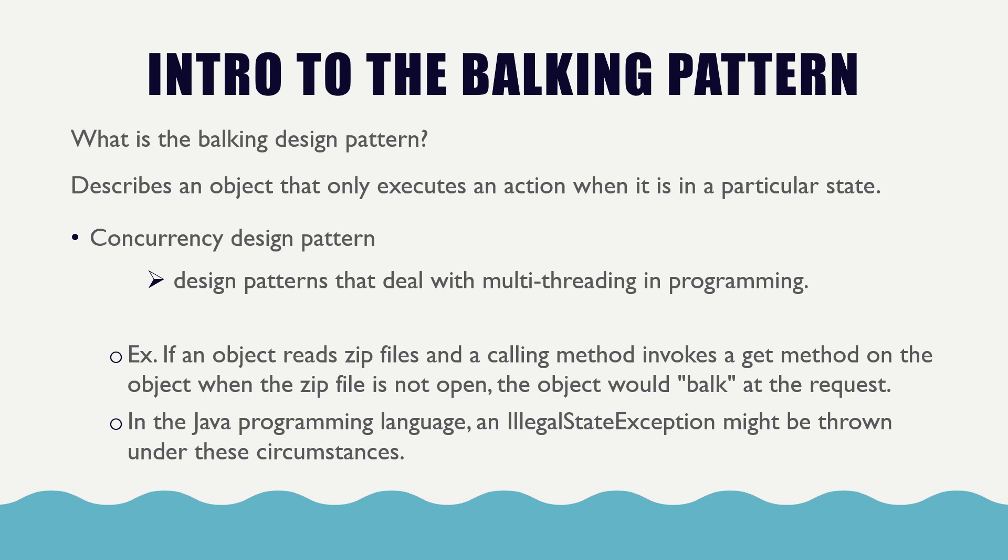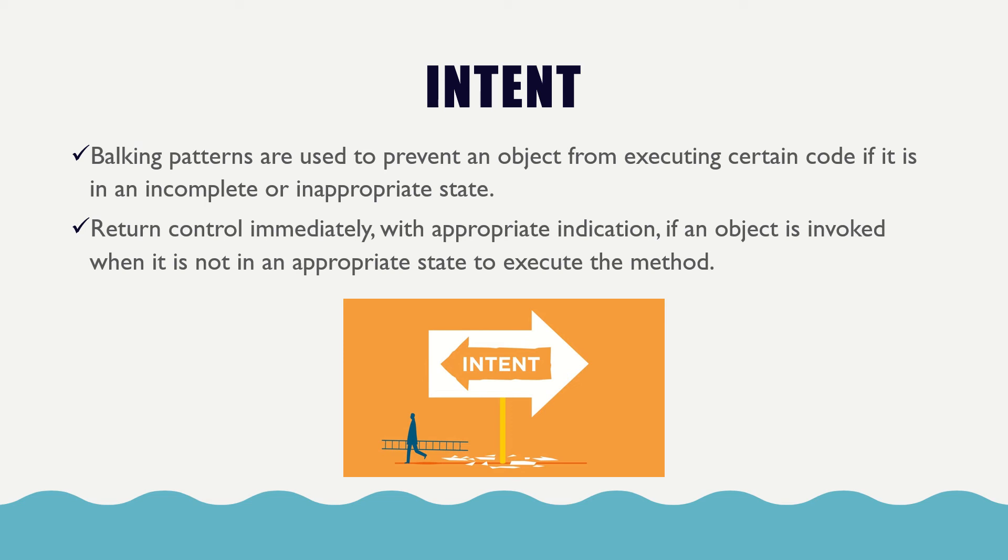The intent. Balking patterns are used to prevent an object from executing certain code if it is in an incomplete or inappropriate state. Return the control immediately, with appropriate indication, if an object is invoked when it is not in an appropriate state to execute the method. Balk literally means to stop at an obstacle and refuse to proceed to do something specified. Objects that use this pattern are generally only in a state that is prone to balking temporarily, but for an unknown amount of time. It can either balk, throw an exception, or log an error.